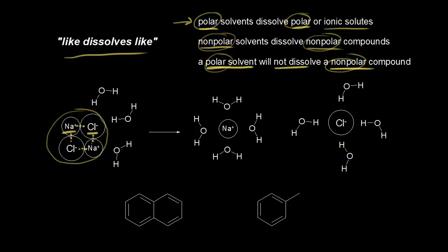If we get some water molecules to come along, we know that water is a polar molecule. The oxygen is more electronegative than hydrogen, so the oxygen pulls some of the electron density in this bond closer to it, giving it a partial negative charge. If we are withdrawing electron density from the hydrogen, that hydrogen gets a partial positive charge. And since opposite charges attract, the partially positive hydrogen on water is attracted to the negatively charged chloride anion. So there's an interaction here — if we get a bunch of water molecules, there's another attractive force.